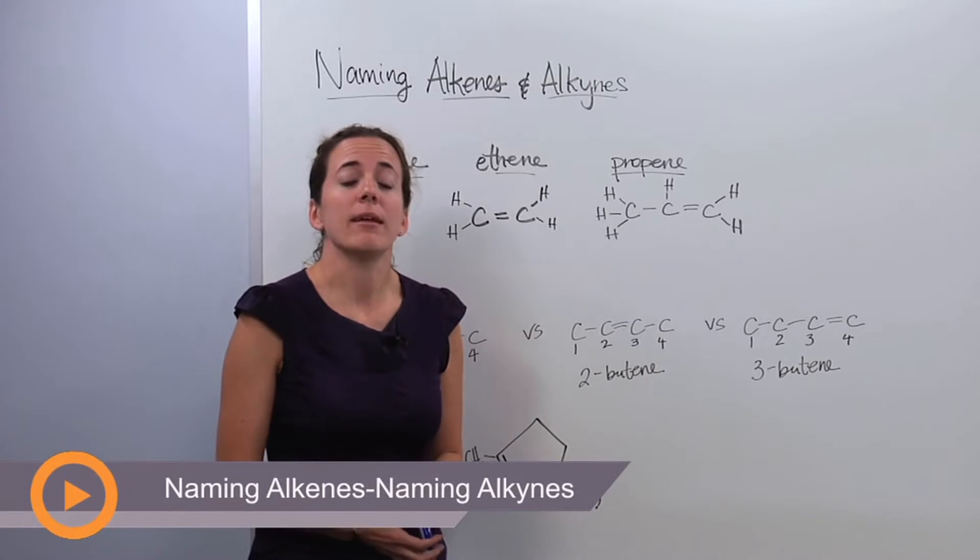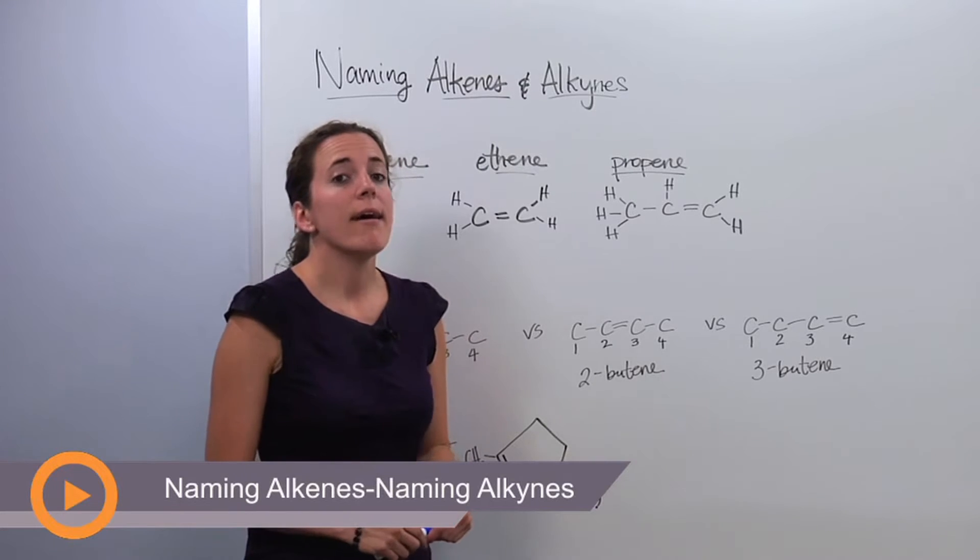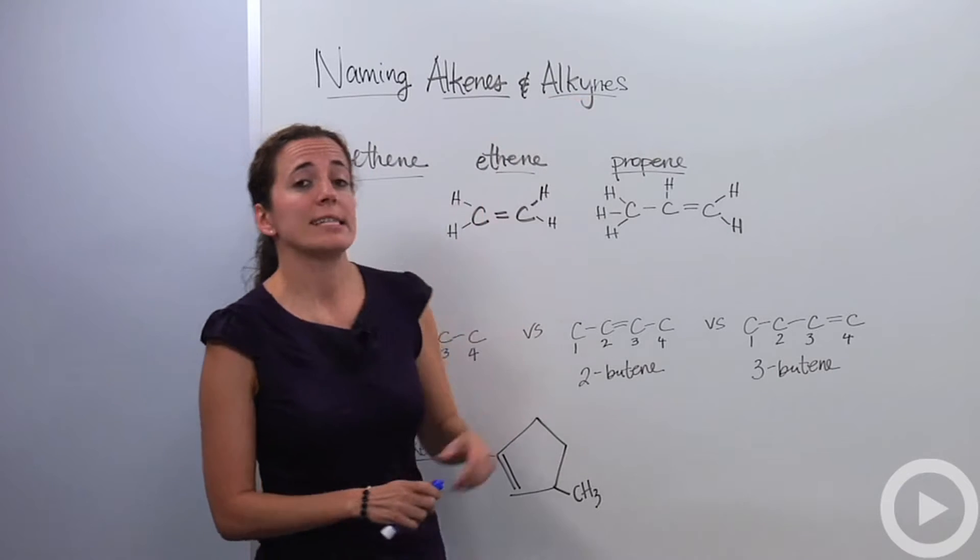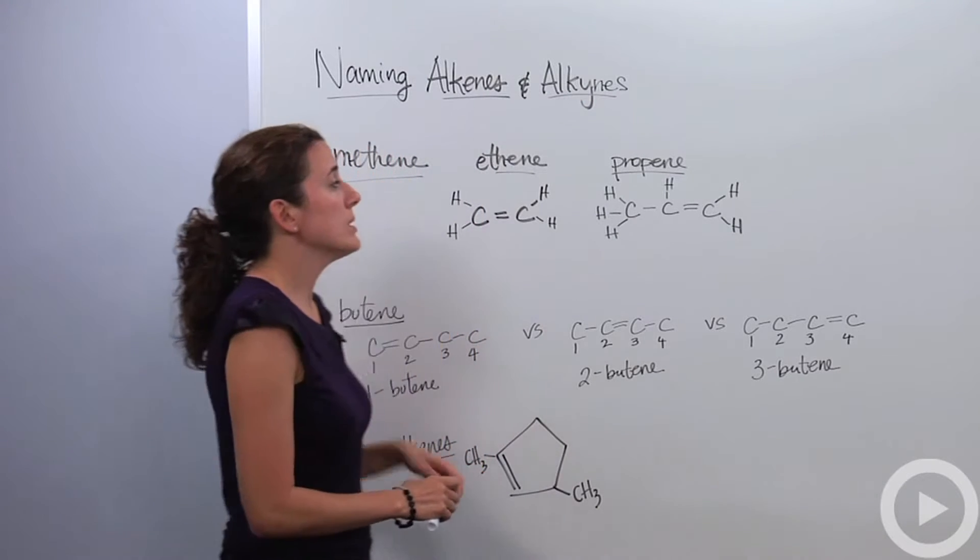Alright, we're going to talk about naming alkenes and alkynes. Alkenes and alkynes are types of hydrocarbons. Alkenes contain double bonds, and alkynes contain triple bonds. So let's talk about naming them.